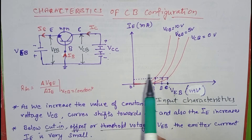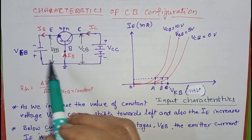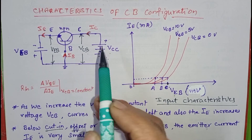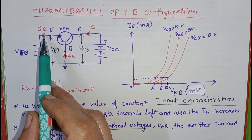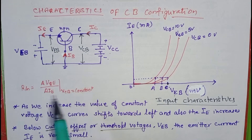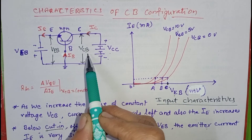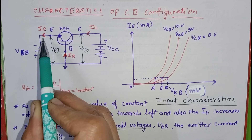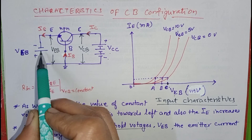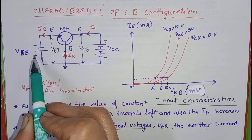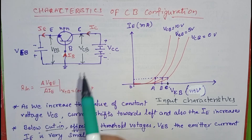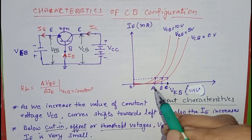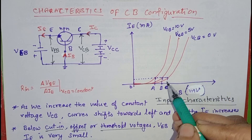To draw the input characteristics of this common base configuration, we will fix the value of VCB and change the value of VEB and note the value of current IE. First, we fix the value of VCB equals to 0, change the value of VEB, and note the value of IE. For some values of VEB, we note the value of IE at this fixed voltage equals to 0. Then we draw the curve using this data.